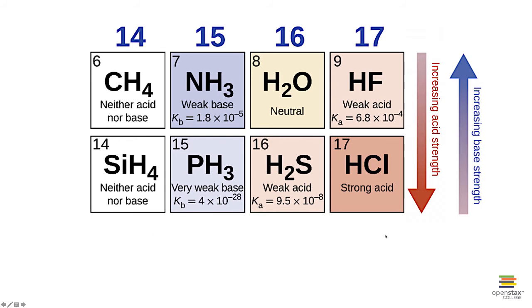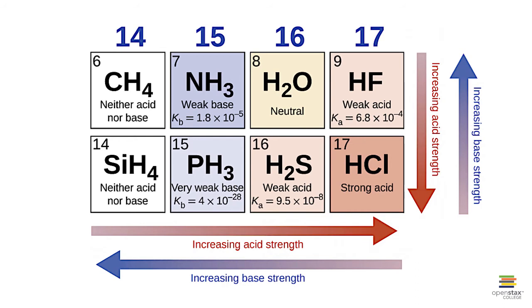And for very similar reasons, going across a row, we have increasing acid strength. So methane, neither an acid nor base, ammonia, weak base, water neutral, hydrofluoric acid or HF is a weak acid, and a similar trend for the next row down. And of course, the base strength goes in the opposite direction of acid strength. And again, note, these are when the hydrogen is directly bonded to the element of interest.